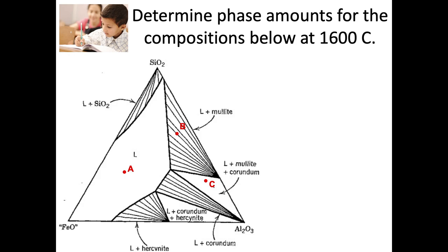This brings us back to the same plot as before. Now that I've asked you how to do it, I actually want you to calculate these amounts. We went through A — so you can write 100% liquid for that — but I want you to concentrate on the phase amounts for B and C. See if you can use those lever rules to get the phase amounts at those two compositions. Pause the video, print it off or make a screenshot however you need to get that image, calculate those phase amounts, and then come back and we will discuss.